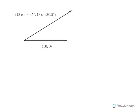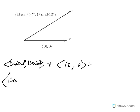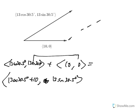Now, adding them together is very easy because you add these two things together algebraically by just adding the horizontal component and adding the vertical components. So these become 13 cosine 30.5 plus 10. And when you add to zero, it stays the same. So it's comma 13 sine 30.5. And that's the component form of the resultant.